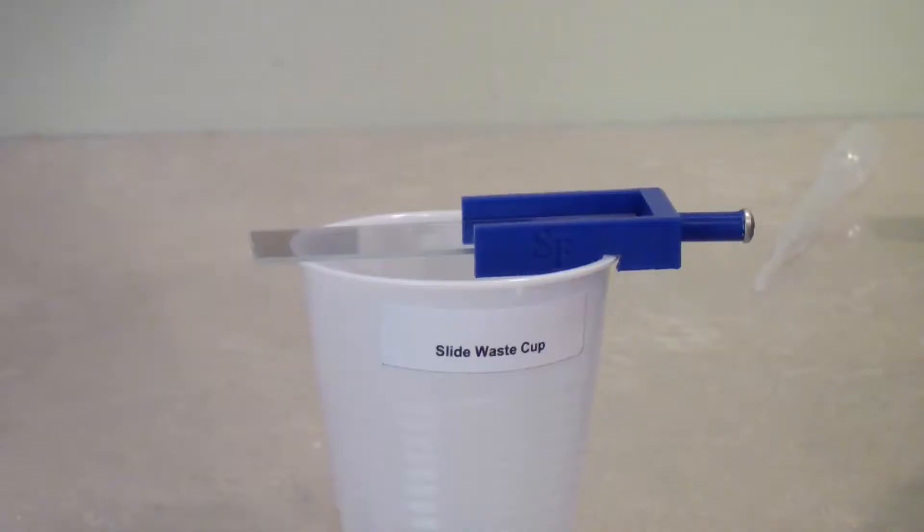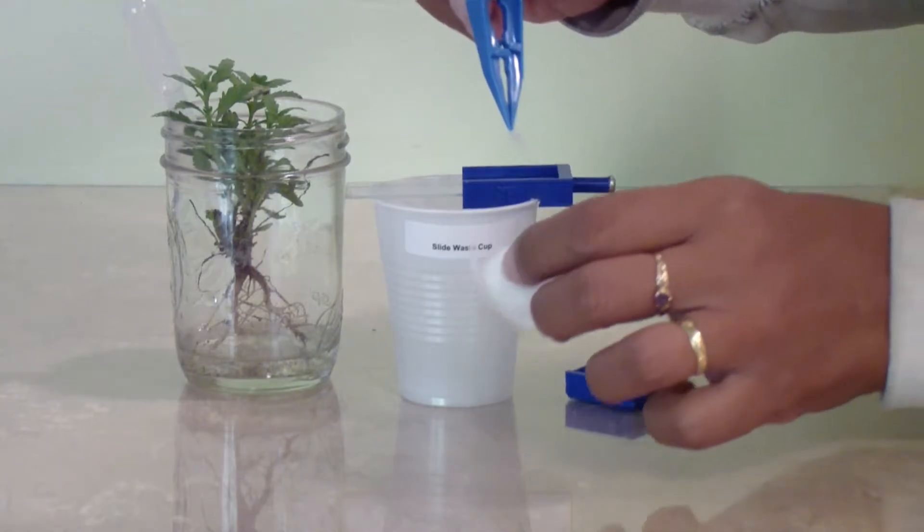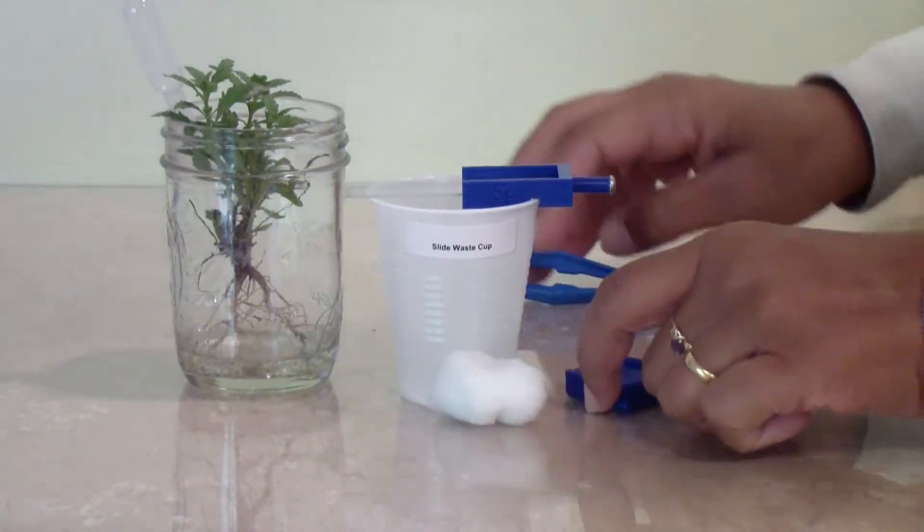Insert the slide into the slide holder and place it on the waste cup. With forceps from your supply box, place a small piece of fiber from the cotton ball in the center of the glass slide.